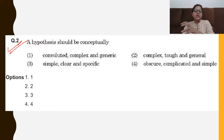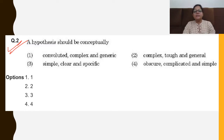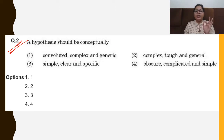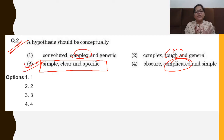Next question: A hypothesis should be conceptually — what features should a hypothesis have? Options are: (A) convoluted, complex and generic; (B) complex stuff in general; (C) simple, clear and specific; (D) obscure, complicated and simple. Even if you don't know the answer, you can tell because all options except one have negative words like 'complex,' 'tough,' or 'complicated.' A hypothesis should be simple, clear, and specific.